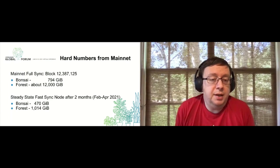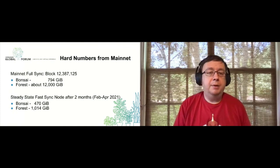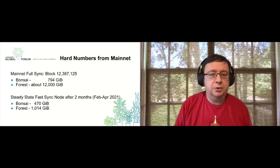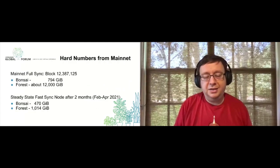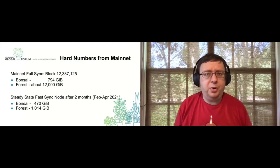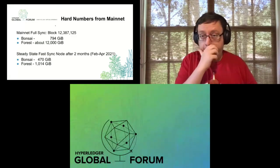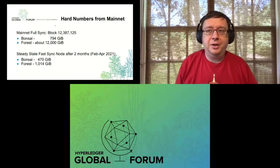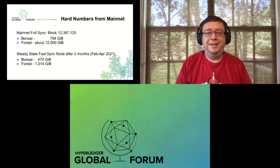Those are very encouraging numbers for when bonsai trees becomes a shipped feature in Besu — hopefully later this year. We need to make sure it burns in and is a good substitute; it's not shipping today but the goal is to get it shipped by end of year — assuming we don't get distracted by everything happening in Ethereum 2.0, which is actually a slightly higher priority. Thank you all for coming to Hyperledger and for giving us a great presentation.